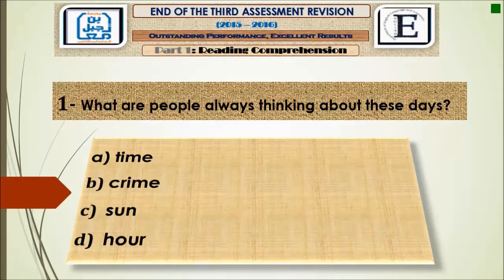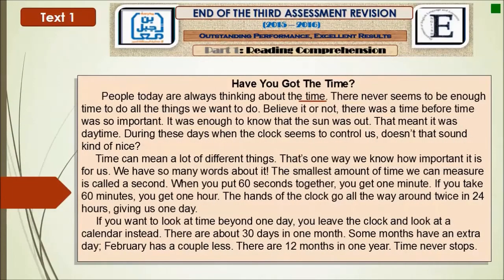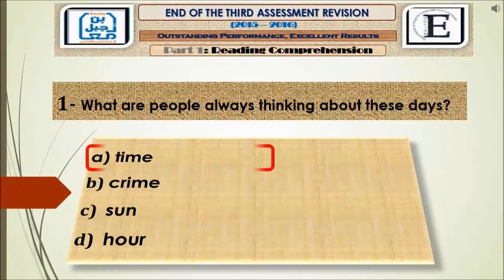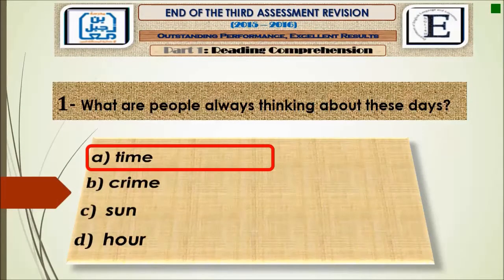Question number one: What are people all thinking about these days? Are they thinking about time, crime, sun, or hour? We have to look again to get our answer. The answer is clear here in the first line: 'People today are all thinking about the time.' So our answer is time.